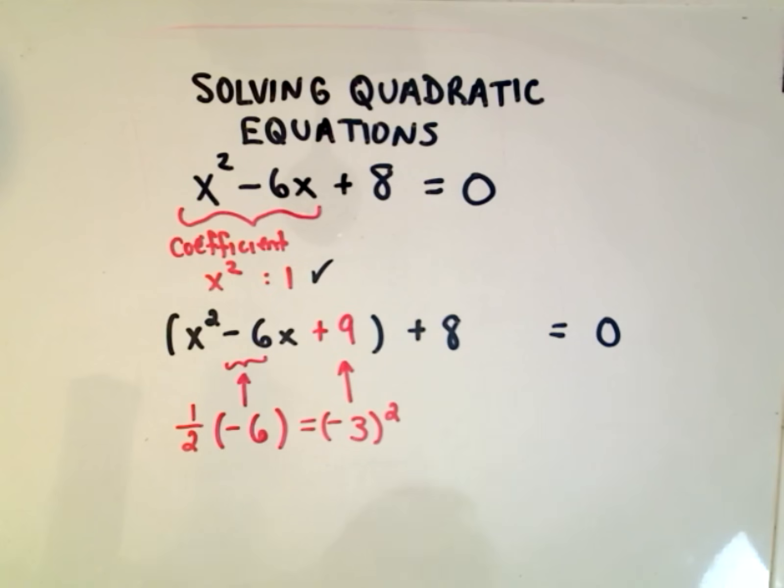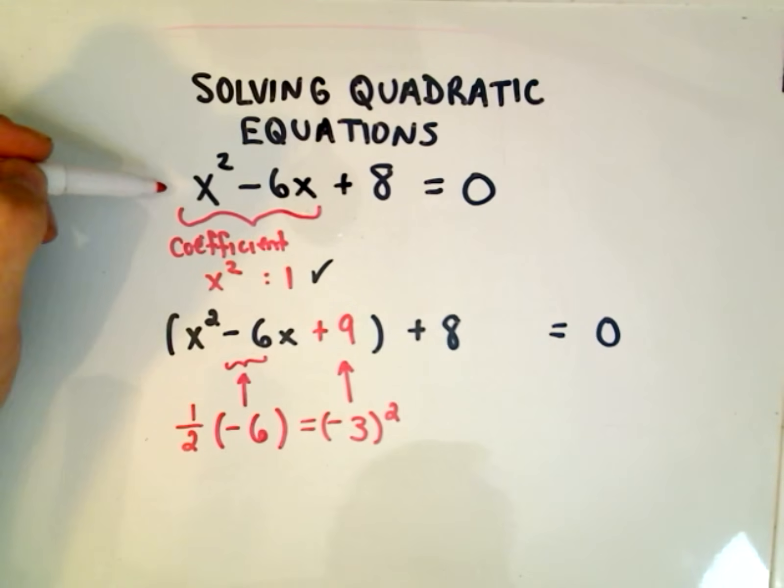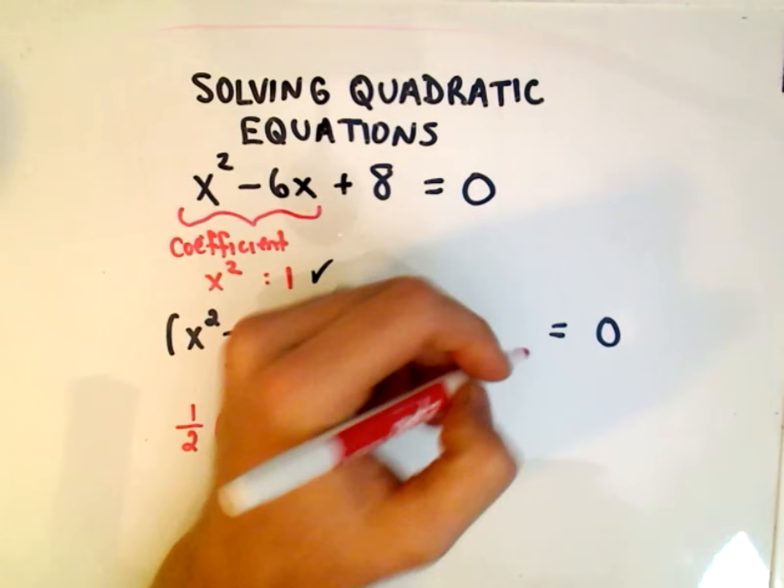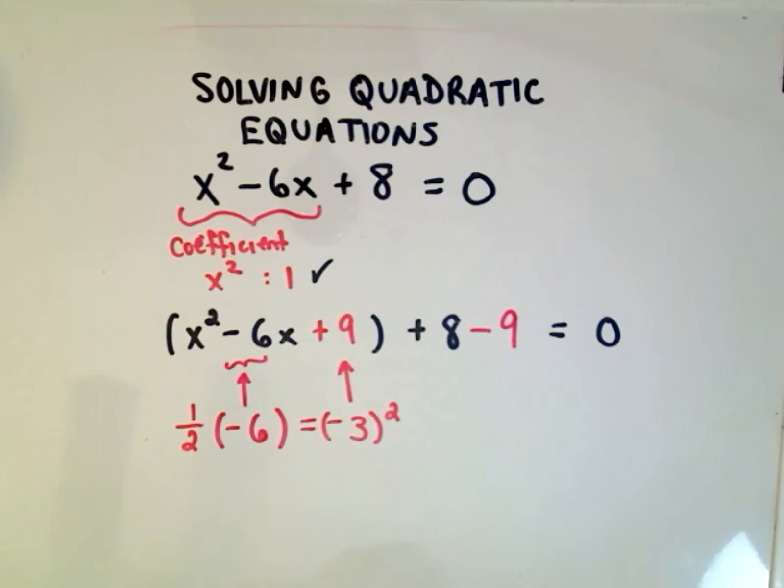Okay, so we've actually just thrown in a brand new number that wasn't there before. We put in this positive 9 that wasn't there. Well, the way that we can get rid of it in this case is, basically imagine just getting rid of the parentheses. We would get back the original thing, except our plus 9 would be there. Well, to cancel it out, we're going to subtract 9.